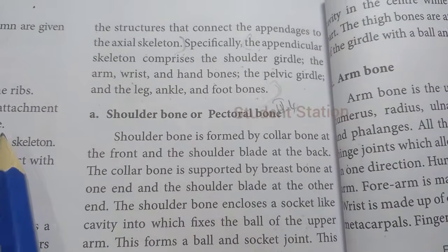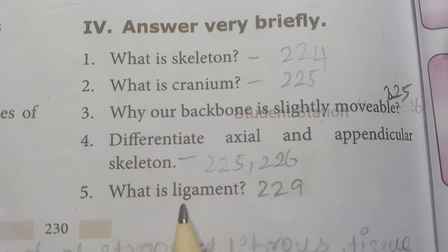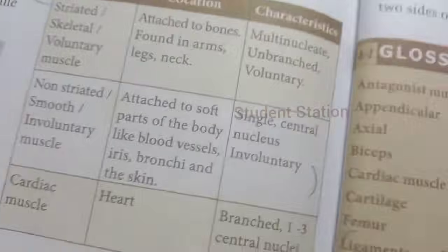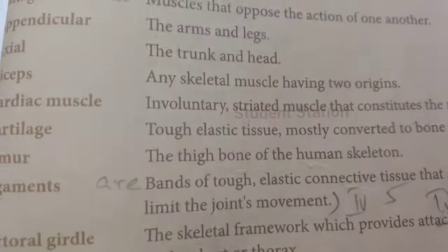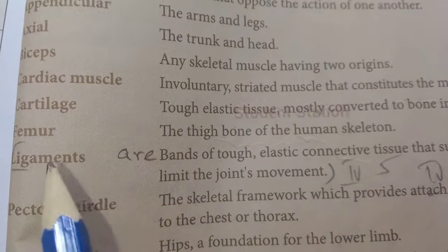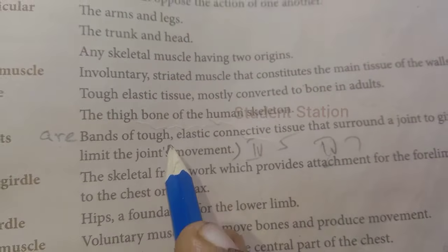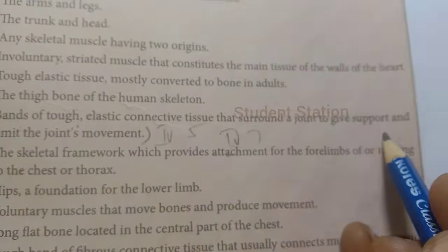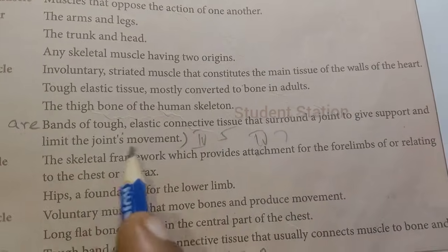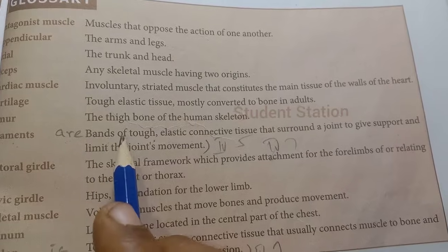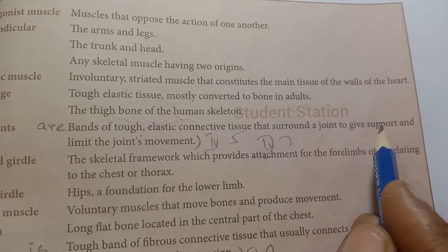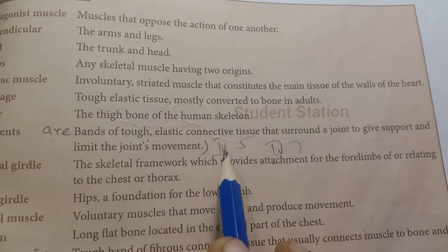Question number 5: What is ligament? Page 229, from the glossary. Ligaments are bands of tough elastic connective tissue that surround a joint to give support and limit the joint's movement. That is Roman number 4, fifth one answer.